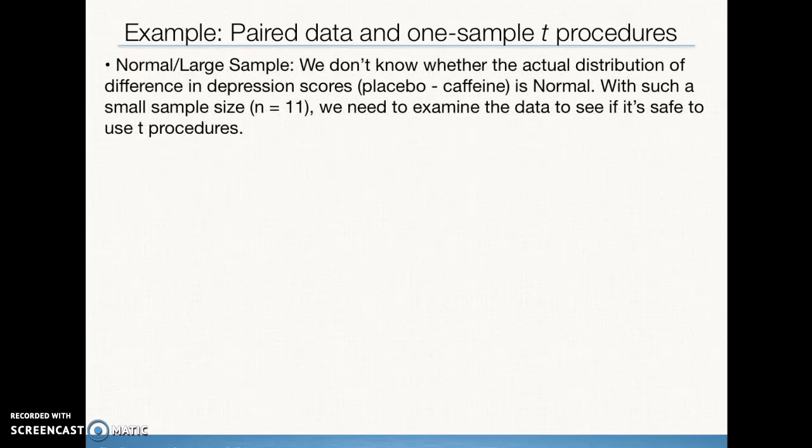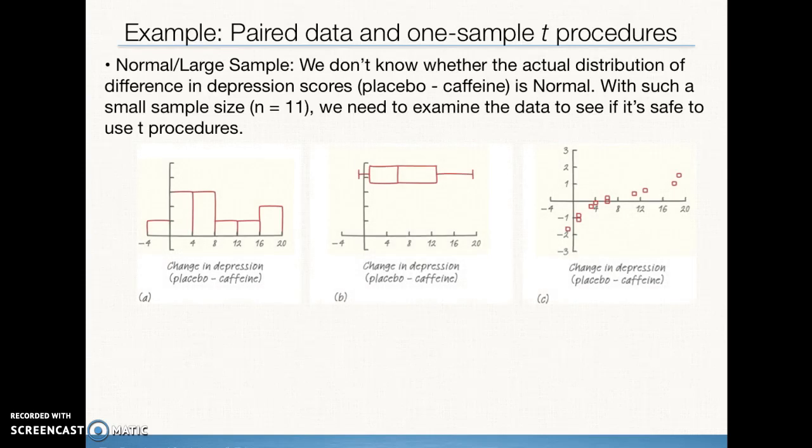The next condition is going to be our normal or large sample size condition. And we have no idea what the population distributions look like. We do know that our sample size with n equals 11 is too small for the central limit theorem to apply, so that means that we're going to need to graph our samples in order to see if it's safe for us to use t-procedures. Remember that we're looking for strong skewness or outliers, and that would preclude us from using t-procedures.